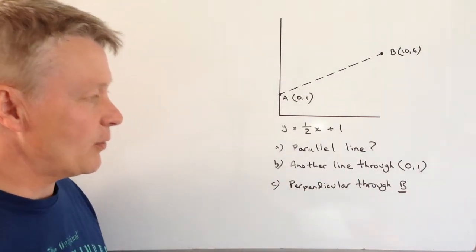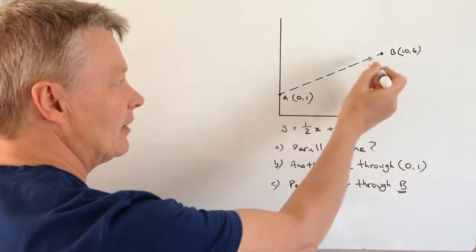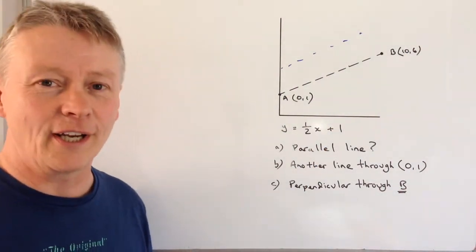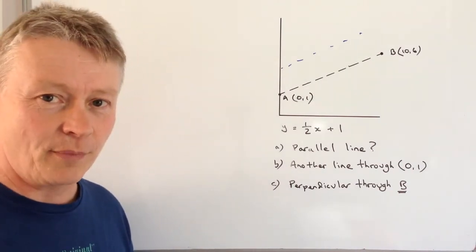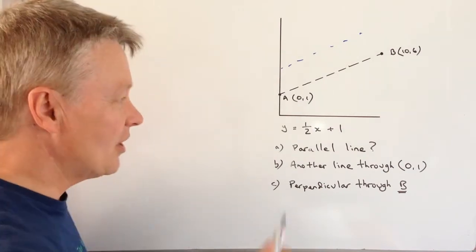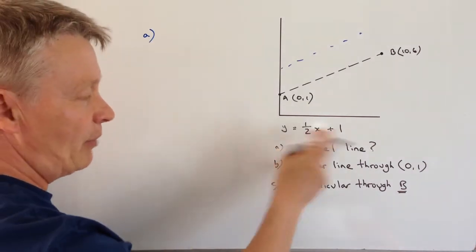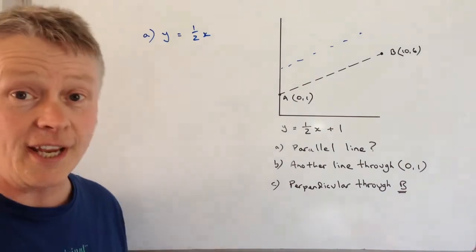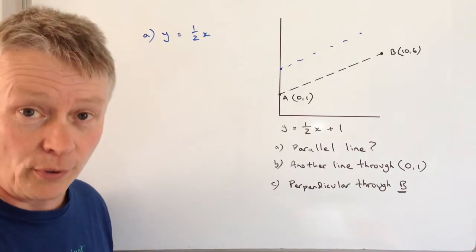So in answer to the first question we've got a parallel line. What we mean by parallel line is any line that's parallel to this. It could be up here and it's running a bit like railway lines, running an equal distance apart. If it's an equal distance apart it means then that the gradient is exactly the same. So in order to answer the first question we could say that a parallel line could be something like y equals a half x which is the same gradient but then it crosses the y-intercept at some other point.